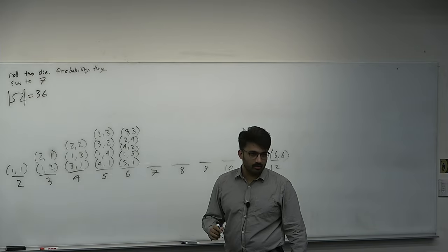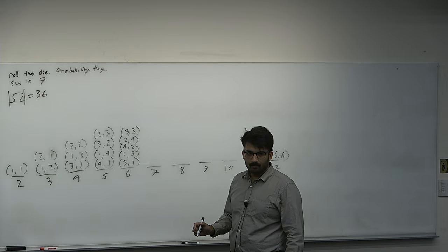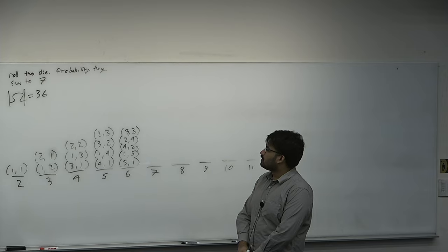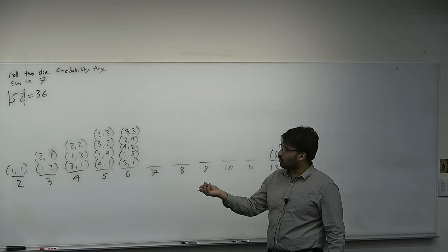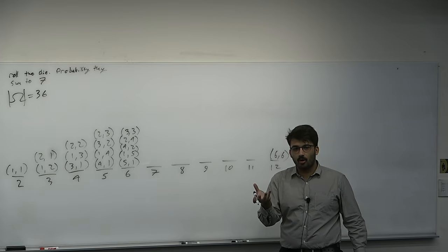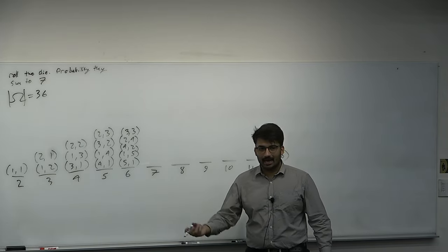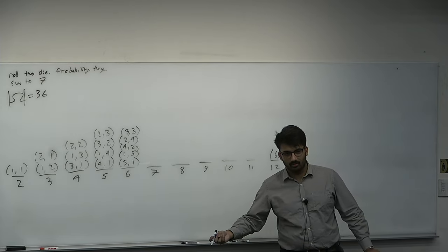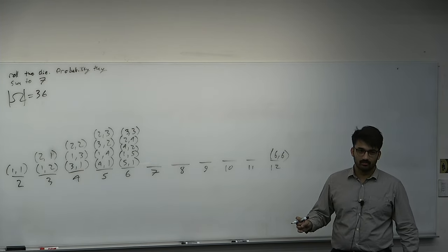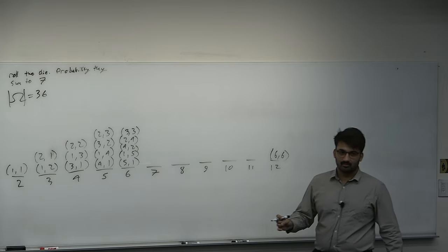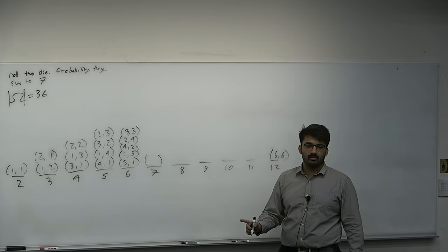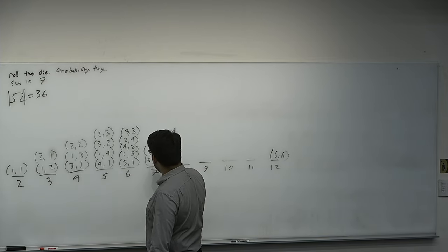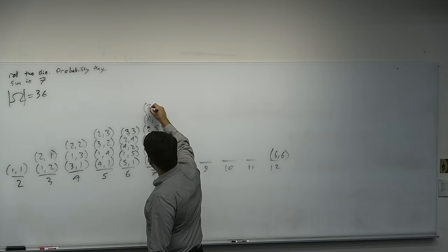Note that 3,3 counts only once since it's an ordered pair — die 1 is 3 and die 2 is 3. The reason there are 36 elements is it's a Cartesian product of all possible rolls of die 1 and die 2. Ways to sum to 7: (6,1), (1,6), (5,2), (2,5), (4,3), and (3,4). Ways to sum to 8: (2,6), (6,2), (4,4), (3,5), (5,3).